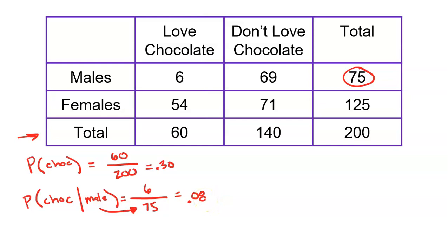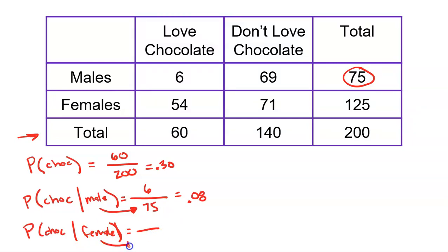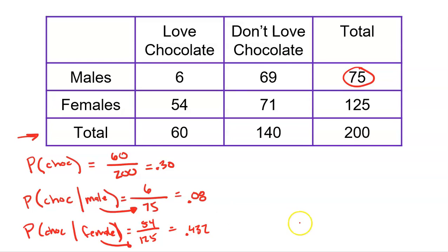We see that there's a tendency: if you're a male, you're less likely to like chocolate. We can also look at the females. We're still focusing on chocolate, but we ask: what if the condition of female is brought up — would that change the proportion? The condition of female changes my denominator to 125 females. Of those 125 females, 54 like chocolate. 54 divided by 125 is about 43%, or 0.432 to be exact. So the variable of gender affects liking chocolate — males less, females more.